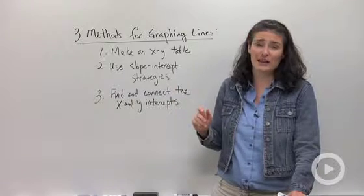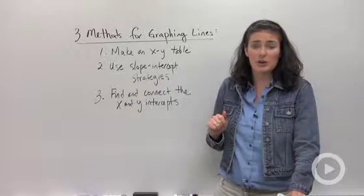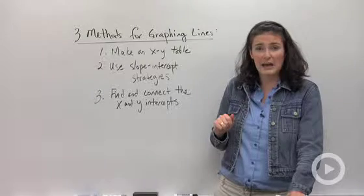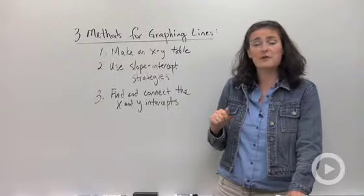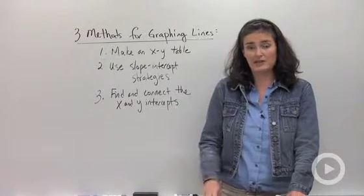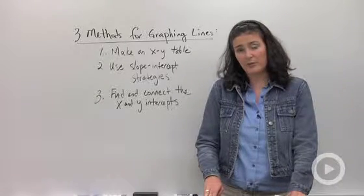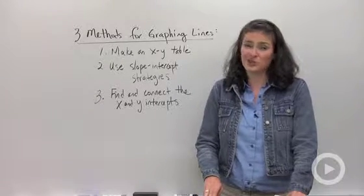Another method you might like to use is the slope intercept method. That's where you put your equation into y equals mx plus b form. Your first dot goes at b, that's the y intercept. From there you count your slope and make another point, and then you connect them. Be sure to use a ruler.